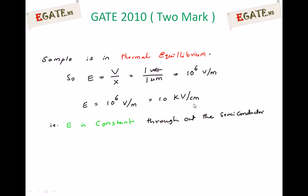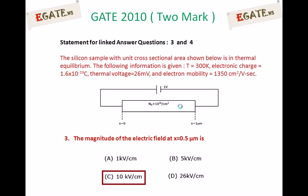The electric field is 10 kV/cm, and since it is under thermal equilibrium, it is constant throughout the semiconductor, even at x = 0.5 micrometers or any other point. If you assume this n-type semiconductor as a distributed resistor, till x = 0.5 micrometers the voltage is 0.5 volts, so 0.5 volts / 0.5 micrometers = 10 kV/cm again.